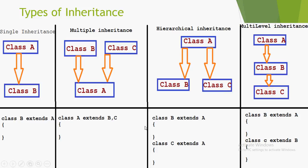We have four types of inheritance, depending on which classes are extended. First, single inheritance: one class extends another class. Second, multiple inheritance: two classes are extended by class C — but in Java, multiple inheritance is not supported. Third, hierarchical inheritance: two different classes extend the same class — class B extends A, and class C extends A.